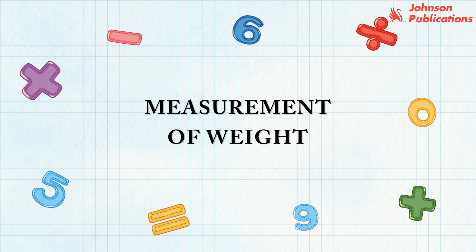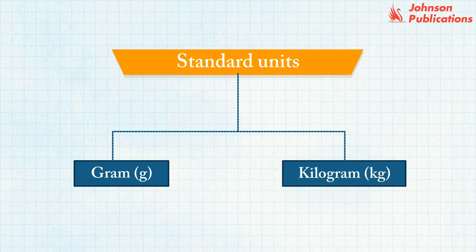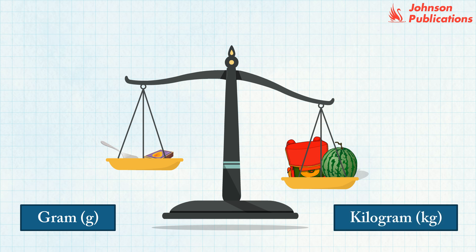Measurement of weight. The standard units of weight are gram and kilogram. Grams are used to measure lighter objects, and kilograms are used to measure heavier objects.